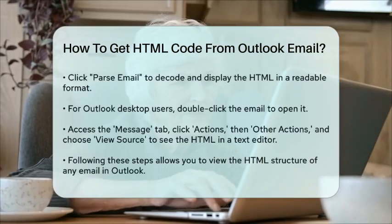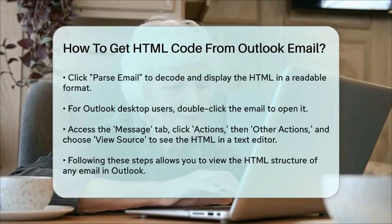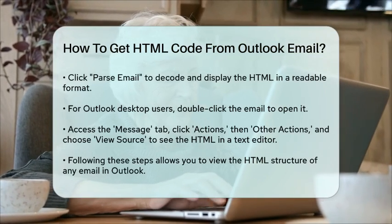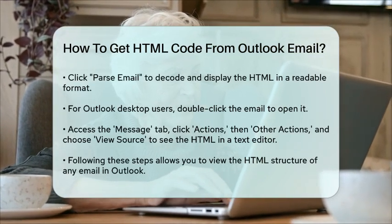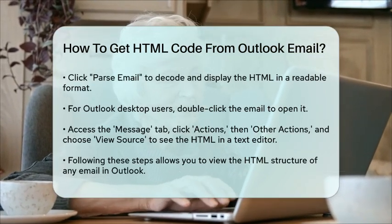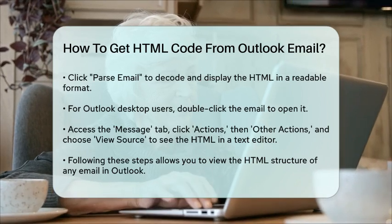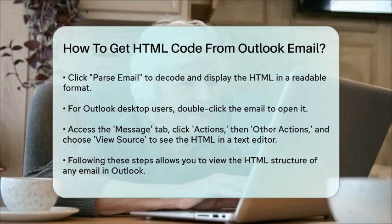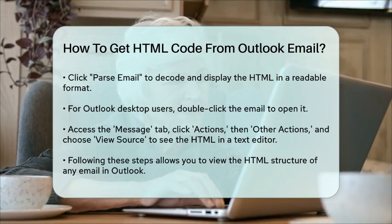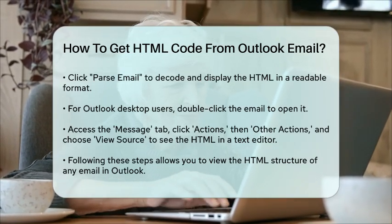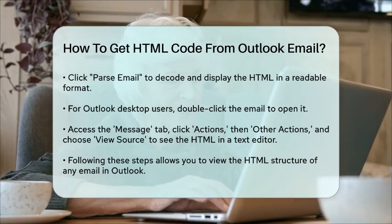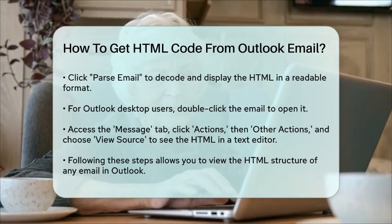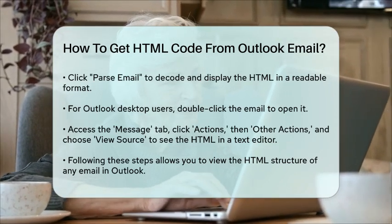Another way to view the HTML code, especially if you're using the Outlook desktop application, is to follow these steps: open the email by double-clicking it, go to the Message tab, click Actions, then Other Actions, and finally select View Source. This will open the HTML code in a text editor. By following these steps, you'll be able to see the HTML code behind any email in Outlook, giving you a glimpse into how emails are structured and coded.